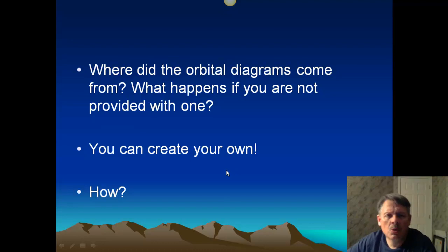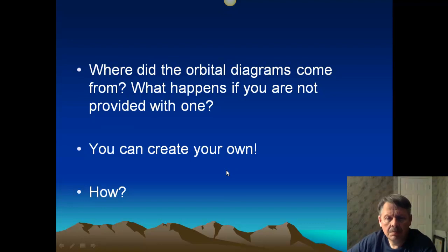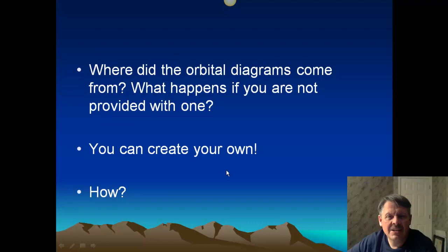So where do those orbital diagrams come from that we did in our last podcast? What happens if you're not provided with one? Well, you can create your own. You have to understand how the orbital diagrams fit together with the periodic table.